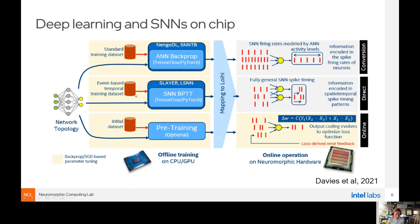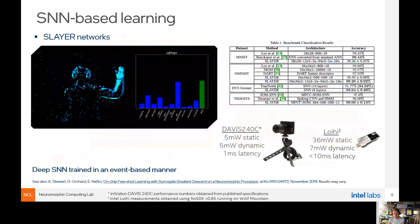The second approach: if I already have an event-based dataset, I can train a spiking neural network directly using a surrogate backpropagation algorithm, get a spiking network that solves my event-based task, and map it onto Loihi. Here information is encoded in special temporal spike timing patterns rather than firing rates. Third, you could have a pre-trained network from either method, map it onto Loihi, and leave space for on-chip online learning — using mathematically well-analyzed learning rules with known convergence properties.